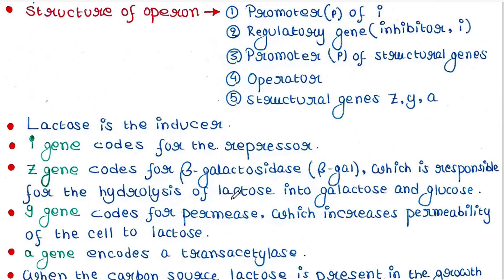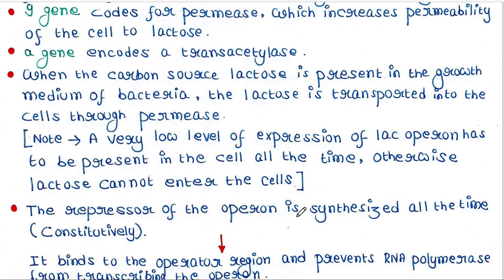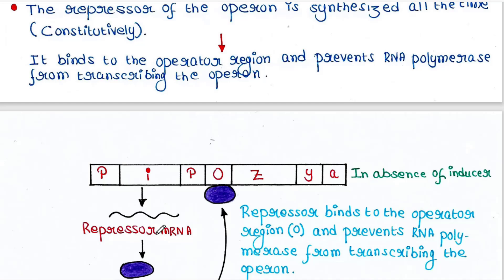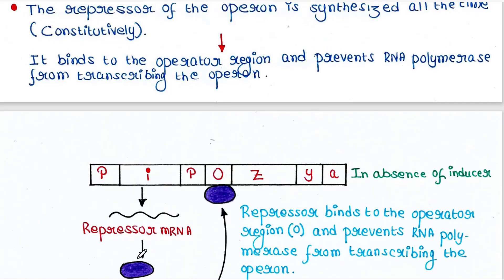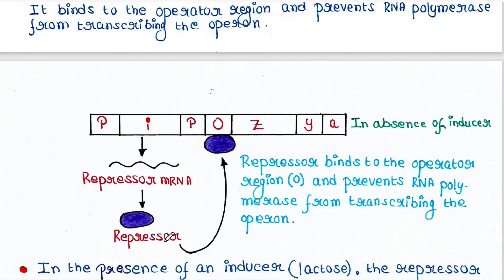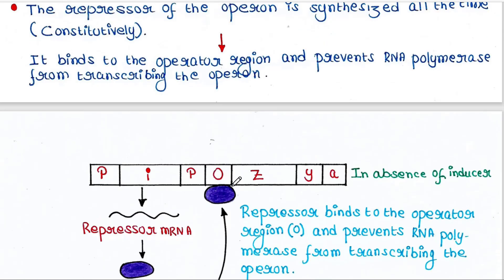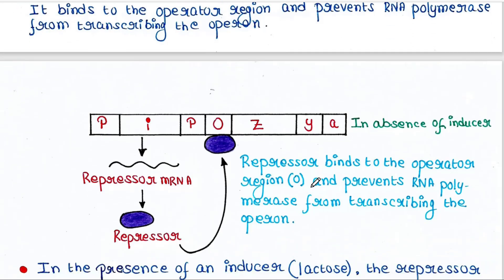Now, what is the role of the repressor? The repressor of the operon is synthesized all the time — this is constitutive expression; it will always be expressed. This repressor mRNA and repressor protein expressed from the i gene will always be present in the cell. The repressor binds to the operator region and prevents RNA polymerase from transcribing the operon. RNA polymerase normally binds the promoter and transcribes the Z, Y, and A genes, but when the repressor binds to the operator, the space is blocked.